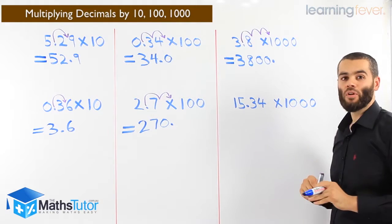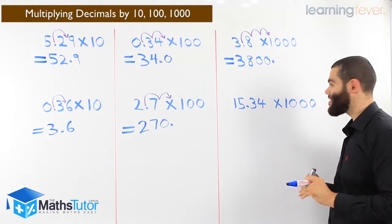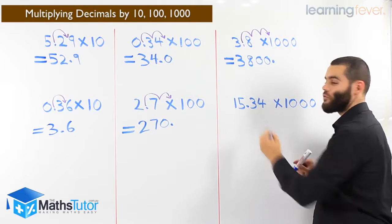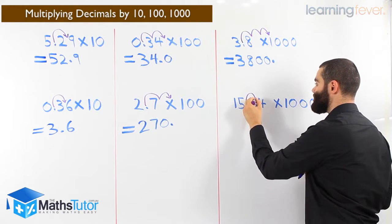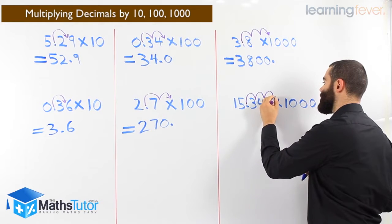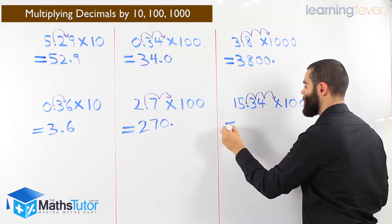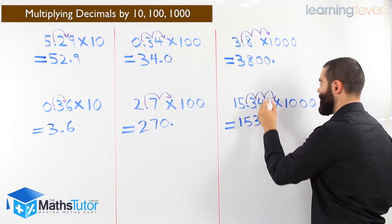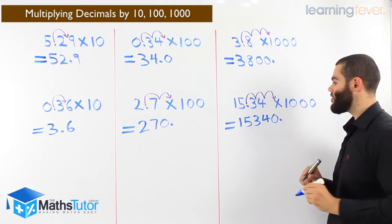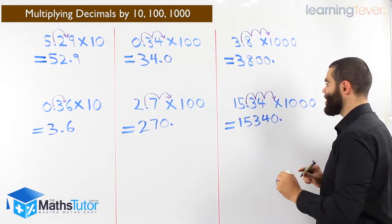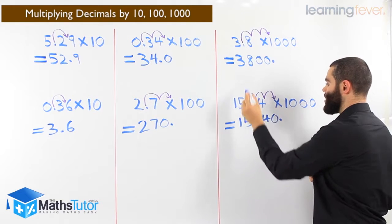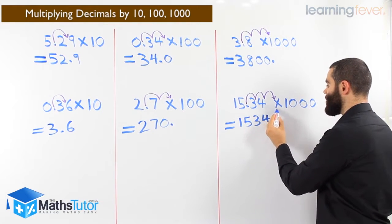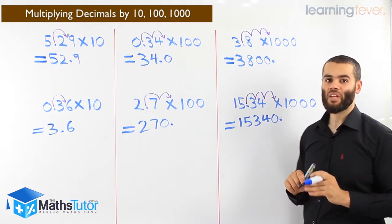Last one: 15.34 times a thousand. A thousand has three zeros. Very easy. We grab our point and say, you don't belong over here, we're going to move you three times to the right. One jump, two jumps, and three jumps. It becomes 15 - one, five. We move that over the three, over the four, and over nothing means zero. We put our point: 15,340. One, two, three jumps. Initially it was between the five and the three, and we moved it once, twice, three times. 15,340.